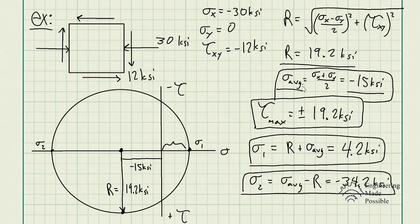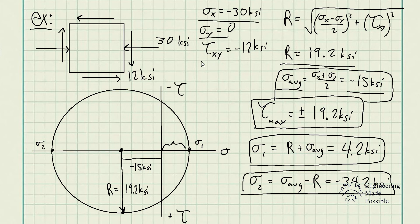With the graphical method, once you solve for the radius and average normal stress and draw Mohr's circle, it's very straightforward to find the principal stresses and maximum shear stress — exactly what this problem asks for. When it comes to solving for the angles, you plot the original sigma x, sigma y, and tau xy on the circle and use trig to find the angle at which the principal stresses and maximum shear stress occur.